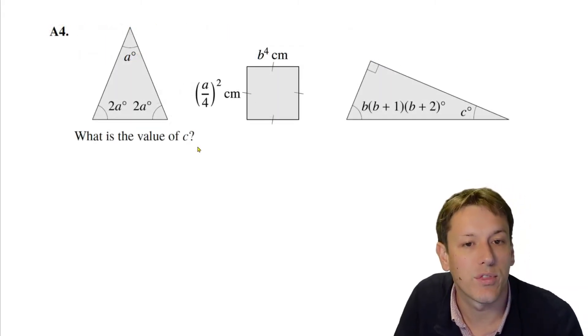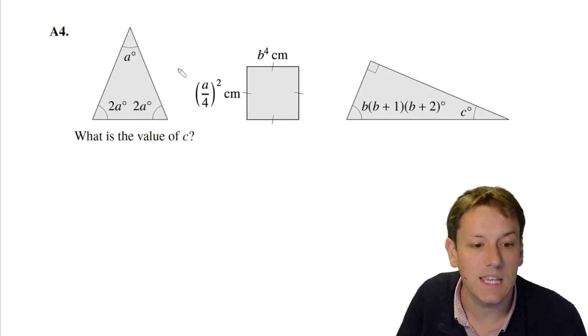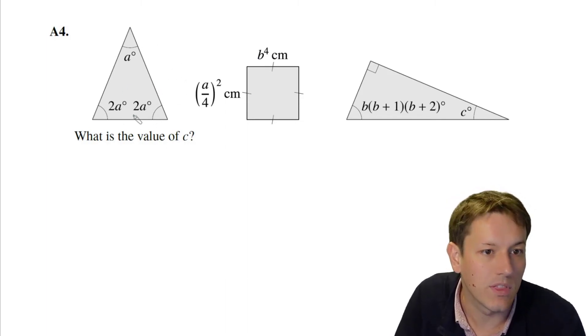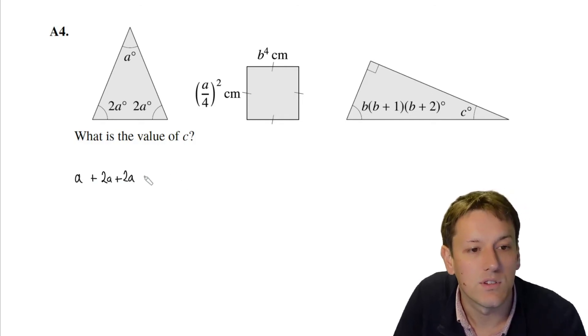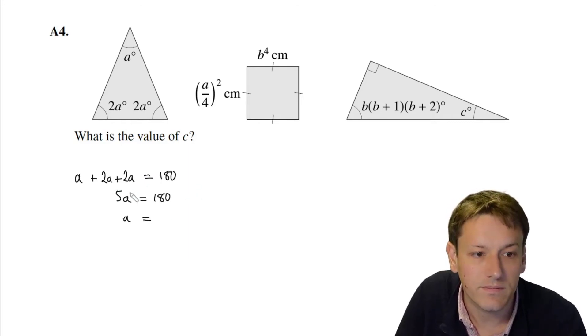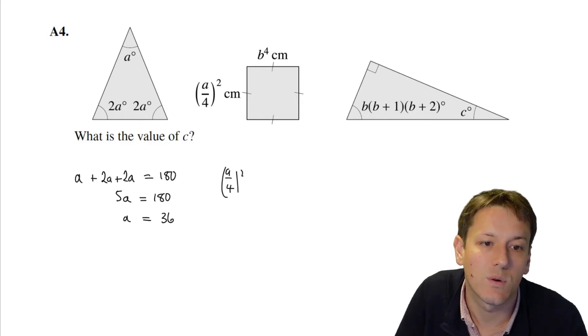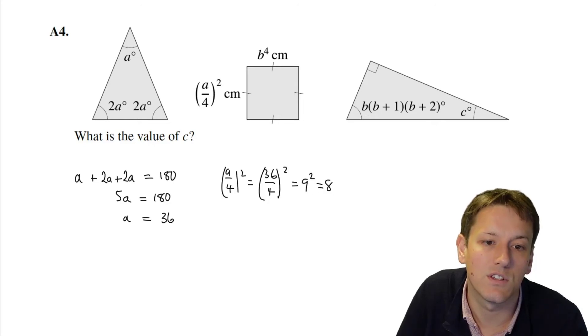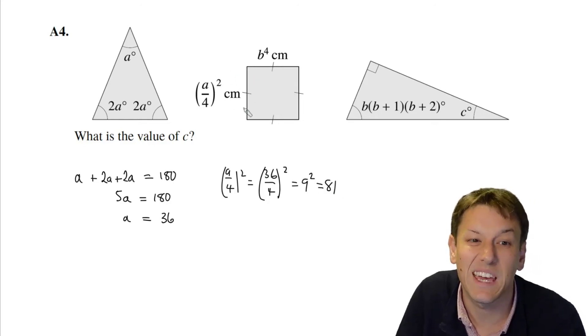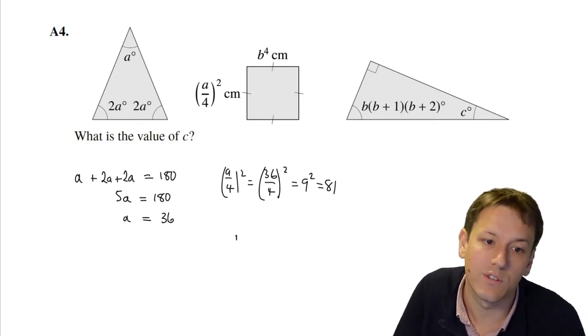In the next question we've got three shapes and we want to work out the value of c. We're going to start with the shape on the left. We've got a triangle and we can see that the angles in the triangle—a plus 2a plus 2a—must equal 180 degrees. So that's 5a equals 180, so a is 180 divided by 5, which is 36. Then in the square, we have (a over 4) squared centimeters. So (a over 4) squared, that would be (36 over 4) squared, so that's 9 squared, which is 81. So the side length of this square must be 81 centimeters.